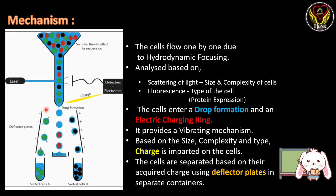In the electric charging ring, there are two electrodes called deflector plates. One is positively charged and another is negatively charged. When the charged cells pass through these deflector plates, positively charged cells are attracted by the negative deflector plate and collected in one container, whereas negatively charged cells are attracted by the positive deflector plate and collected in a different container. Thus, cells are separated based on size and fluorescence.